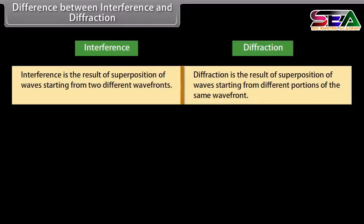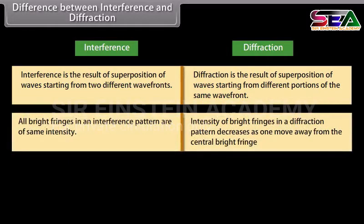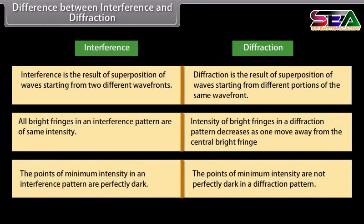Difference between interference and diffraction. Interference is the result of superposition of waves starting from two different wavefronts, whereas diffraction is the result of superposition of waves starting from different portions of the same wavefront. All bright fringes in an interference pattern are of same intensity, whereas intensity of brightness in a diffraction pattern decreases as one moves away from the central bright fringe. The points of minimum intensity in an interference pattern are perfectly dark, whereas the points of minimum intensity are not perfectly dark in a diffraction pattern.